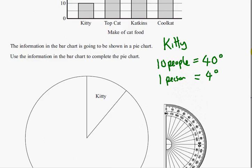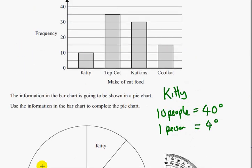So the next one is going to be top cat. I'm going to do it here. So top cat has 35 people who like this brand the best. Each person is 4 degrees of the pie. So we need to times that by 4. So 35 times 4 is 140 degrees. So 140 degrees of the pie belongs to top cat.